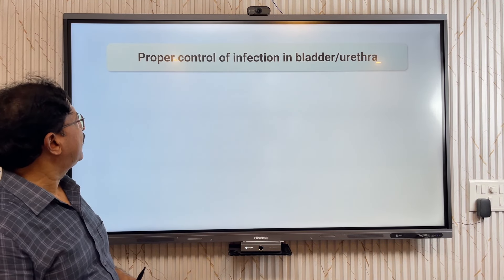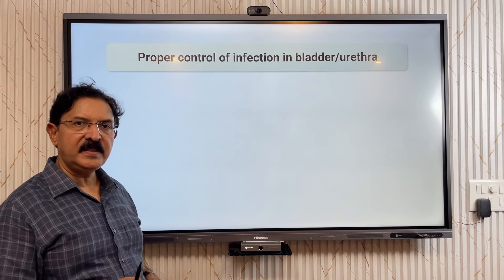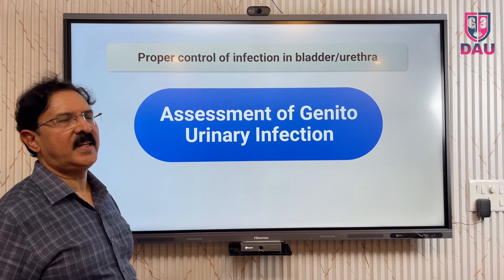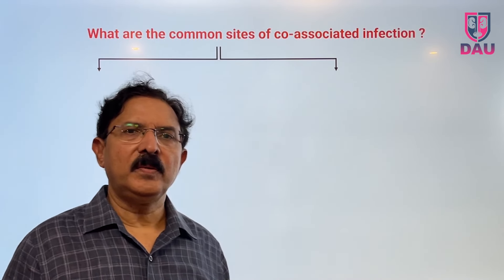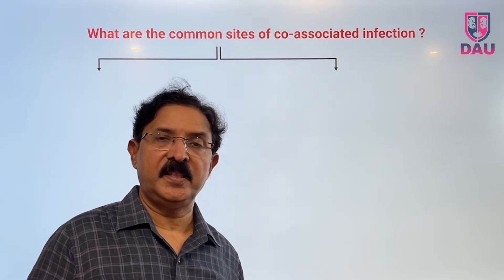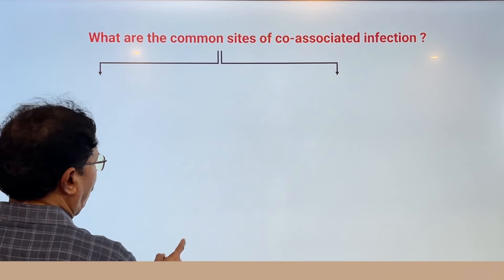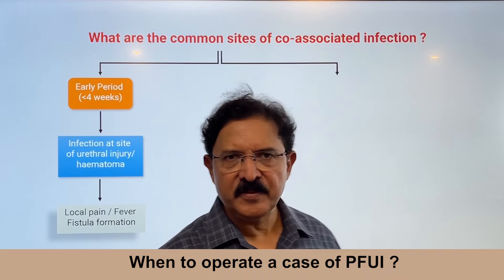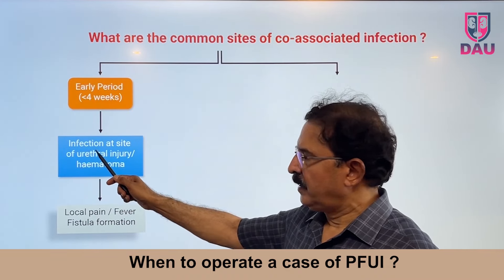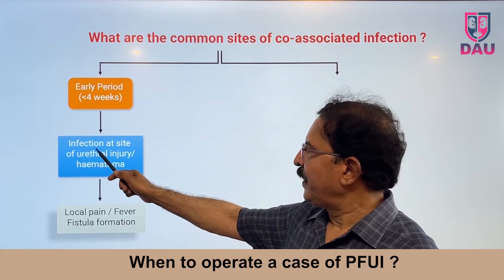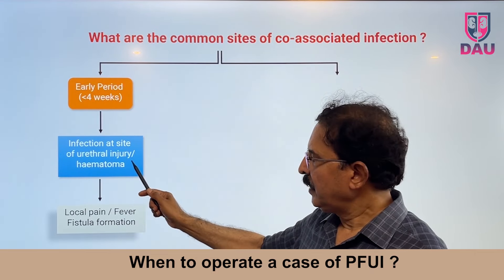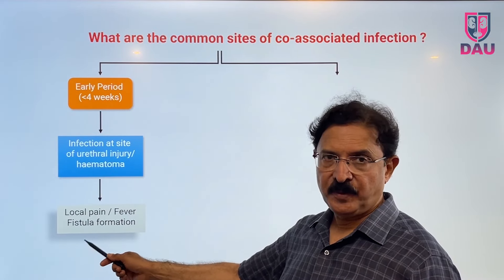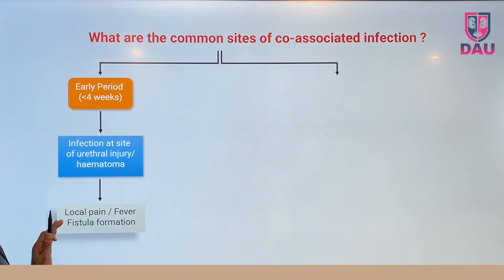The fourth factor is proper control of infection in the bladder and urethra. In the early period — less than four weeks from injury — if the hematoma gets infected, you have infection at the site of urethral injury and hematoma, resulting in local pain, fever, abscess formation, and sometimes fistula formation. Fortunately this does not happen in many patients.